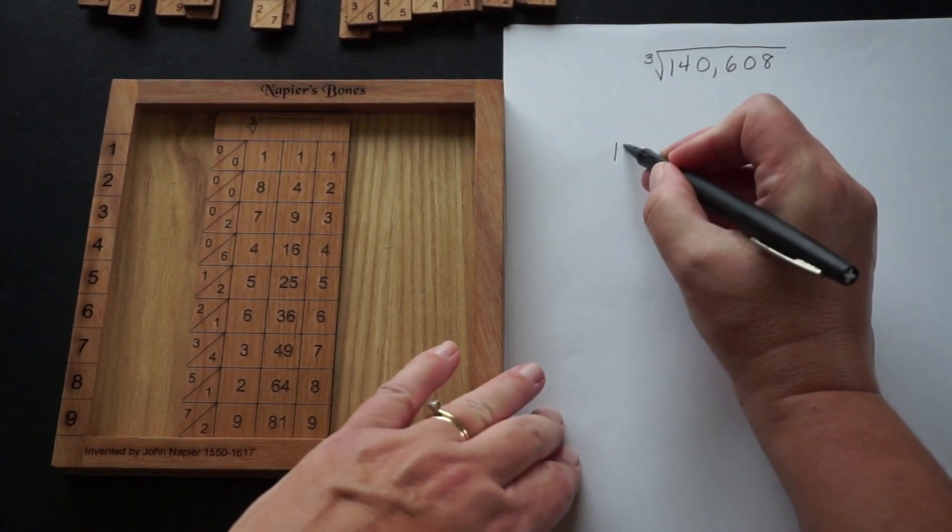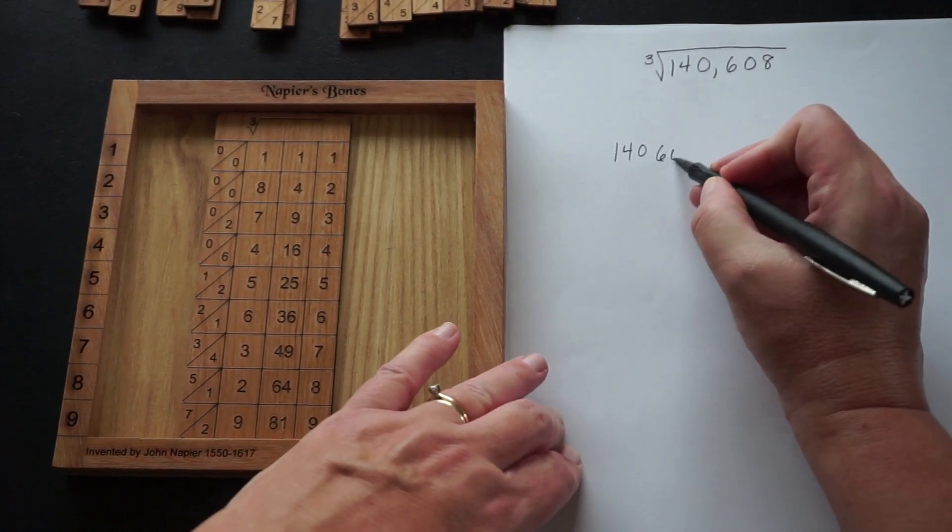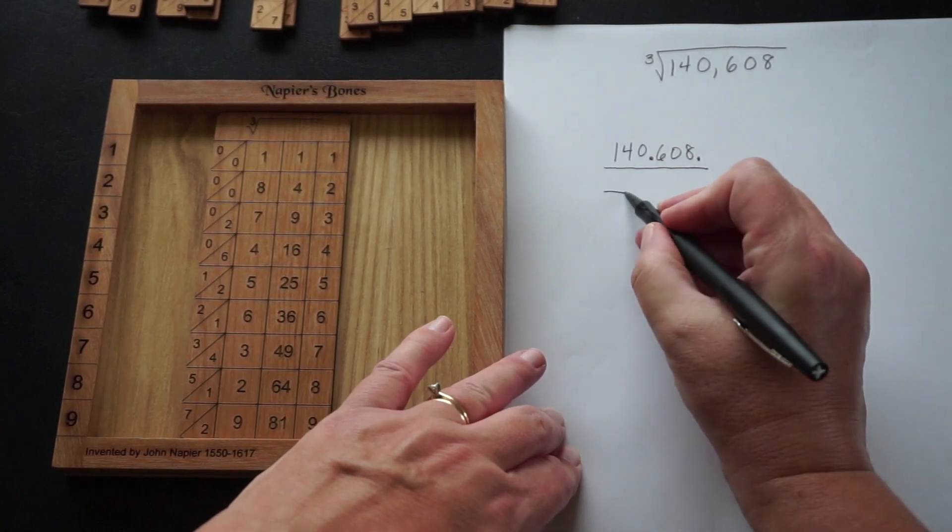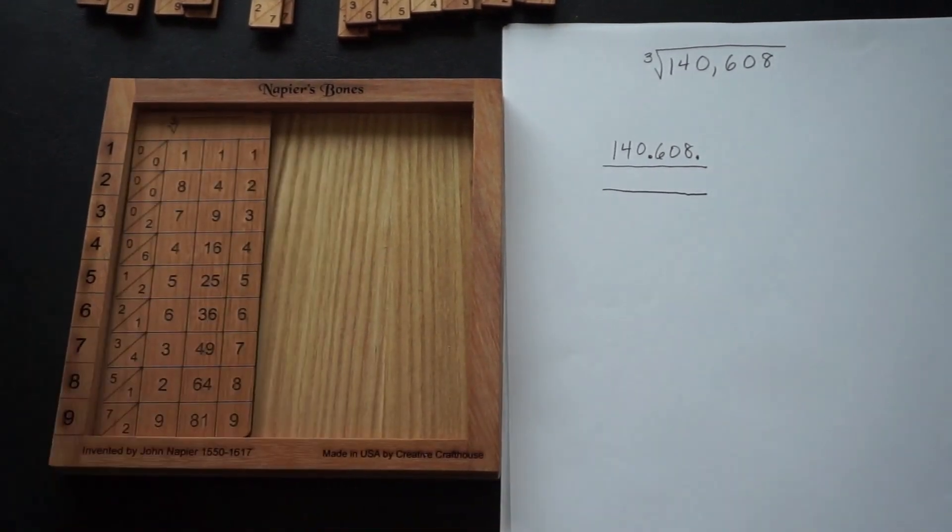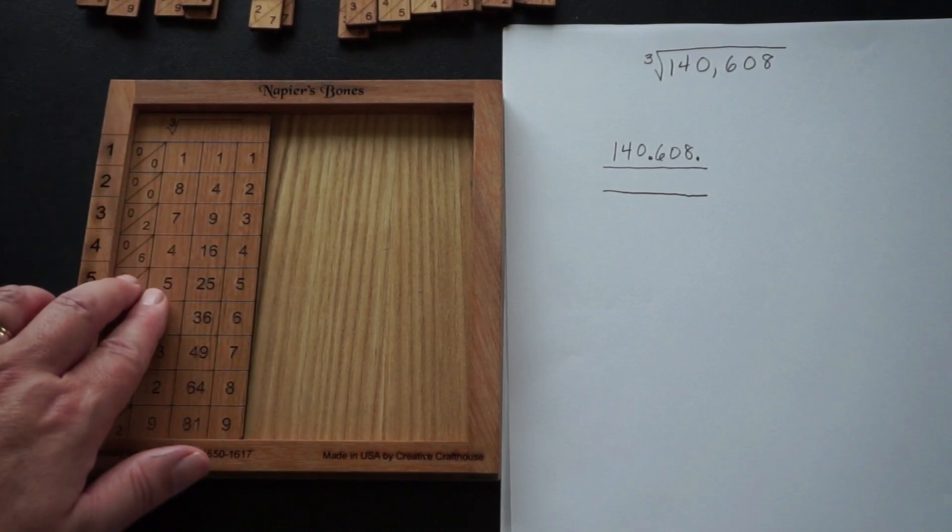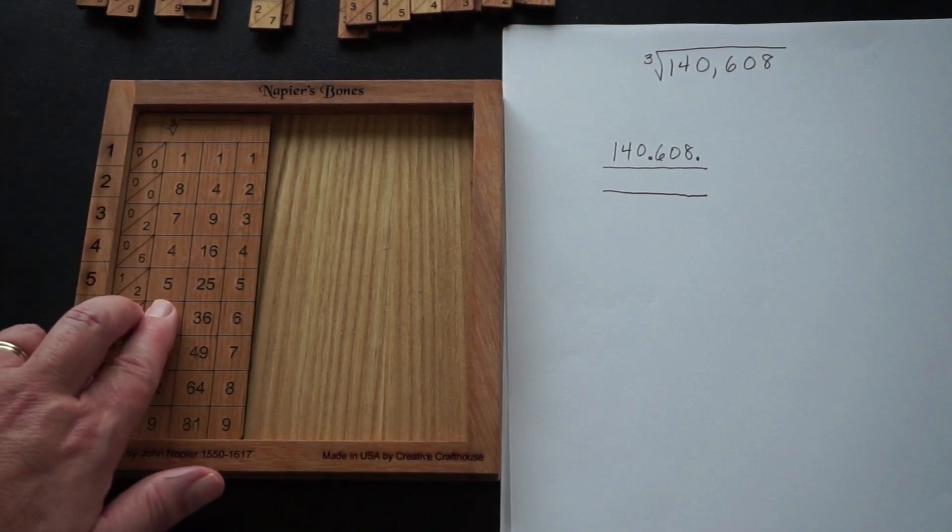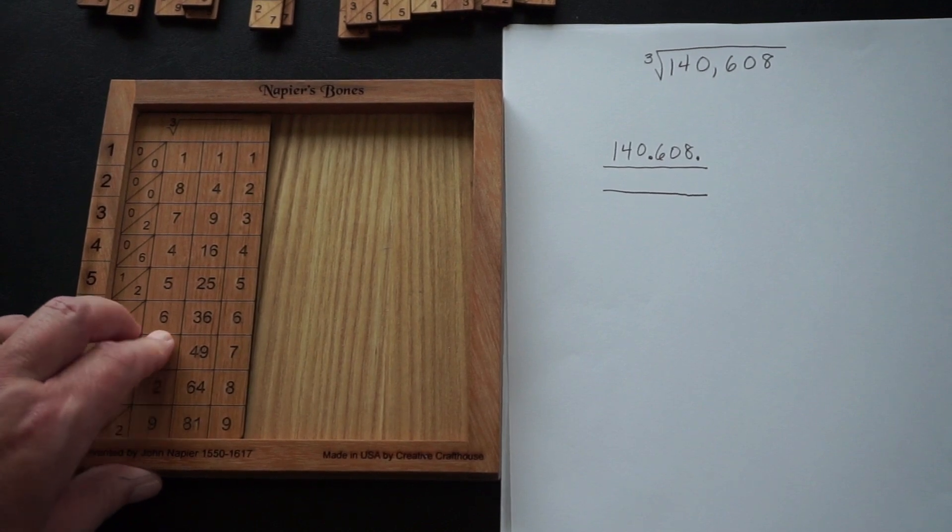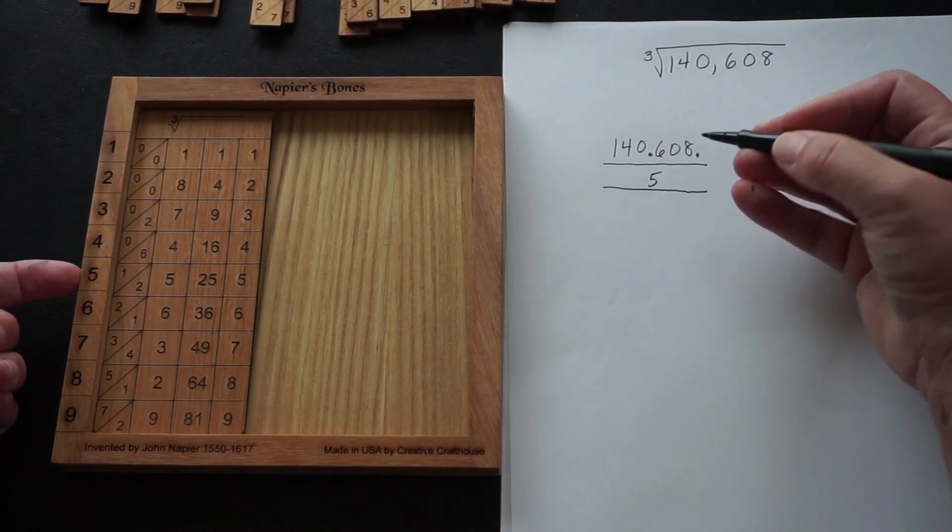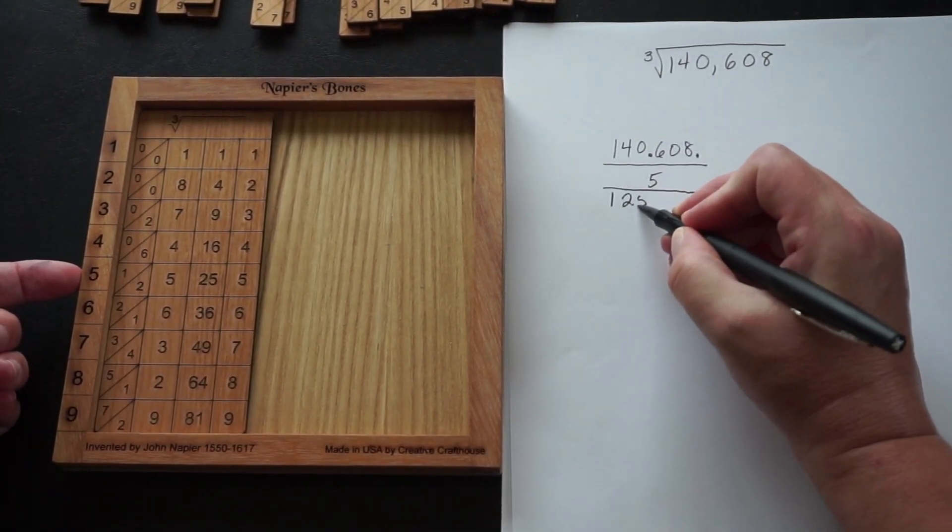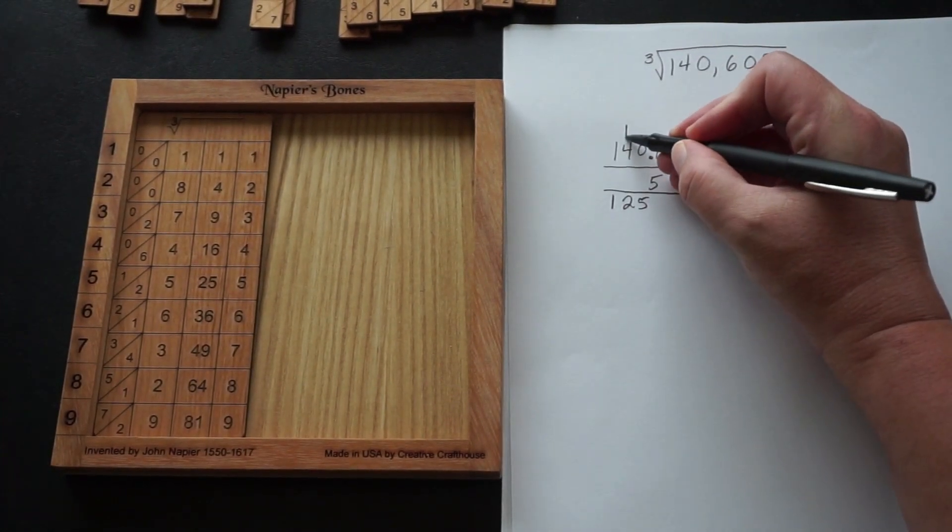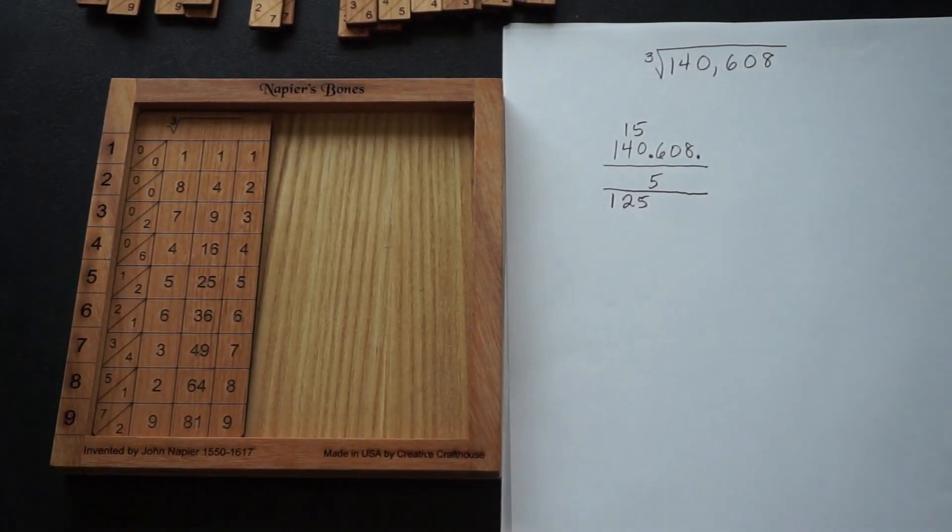So again, writing it out, splitting it into triples. Don't forget the dot at the back because the last digit of your answer goes underneath the dot. We start with just the plate. Closest cube to 140 without going over is 125. The next one up is 216. 125 is in row five. So that's the first part of our answer. And then we subtract 125 from 140, and the result is 15.